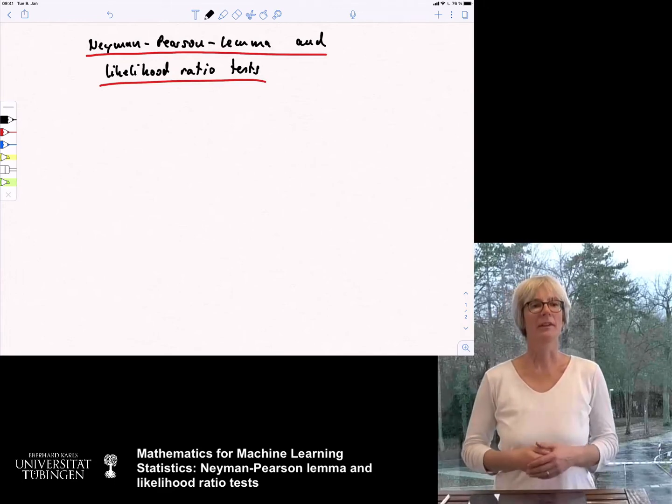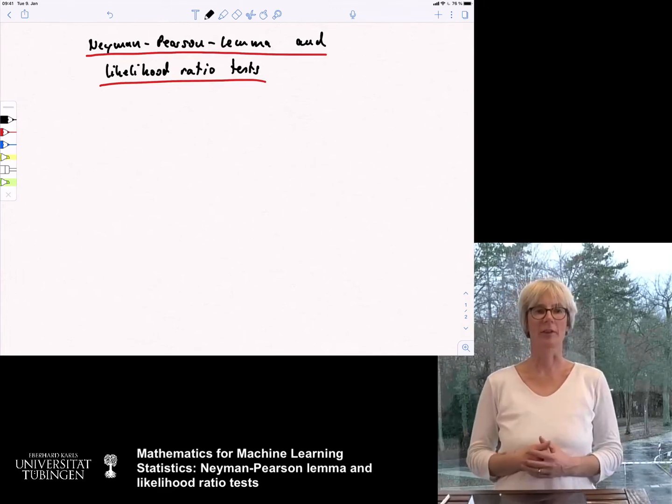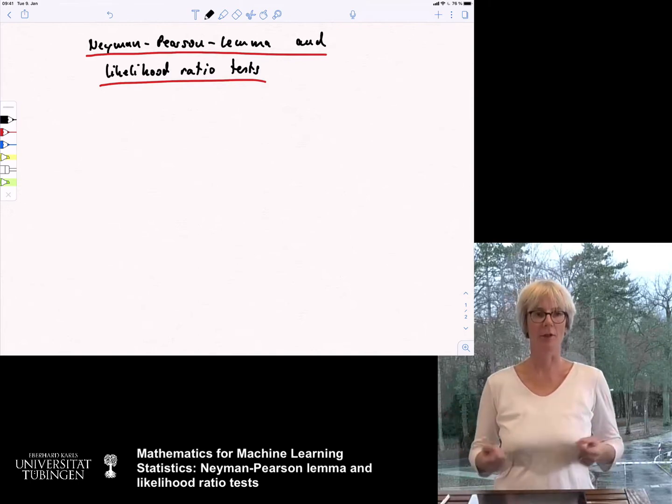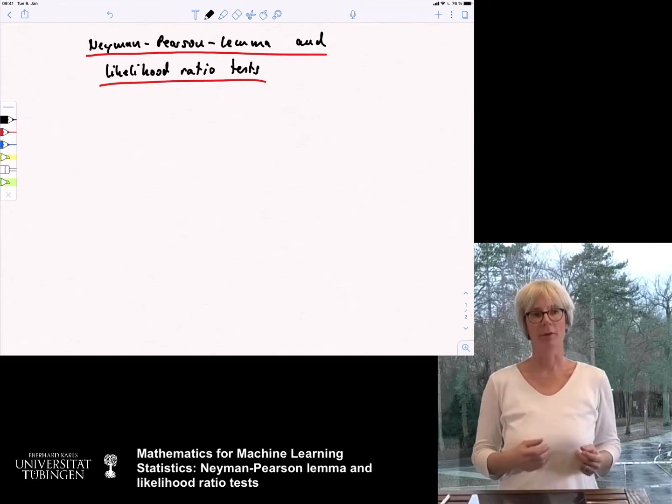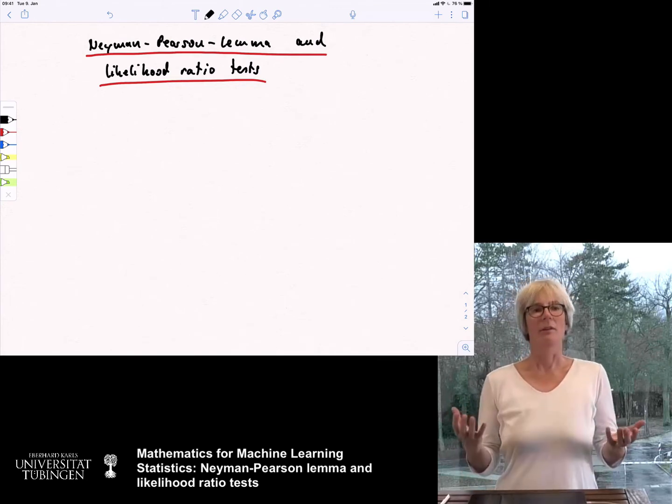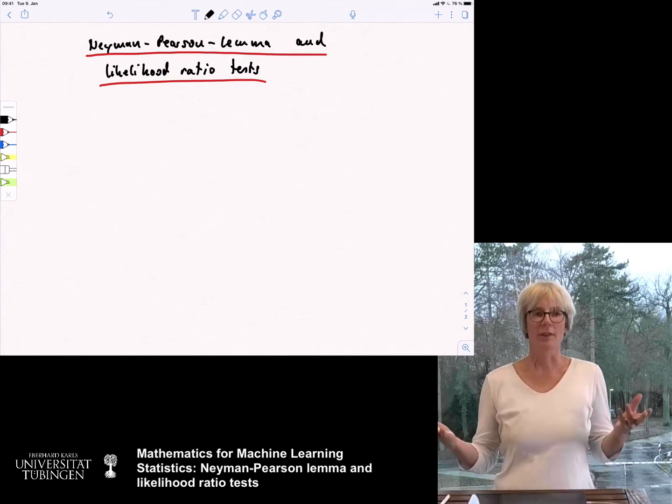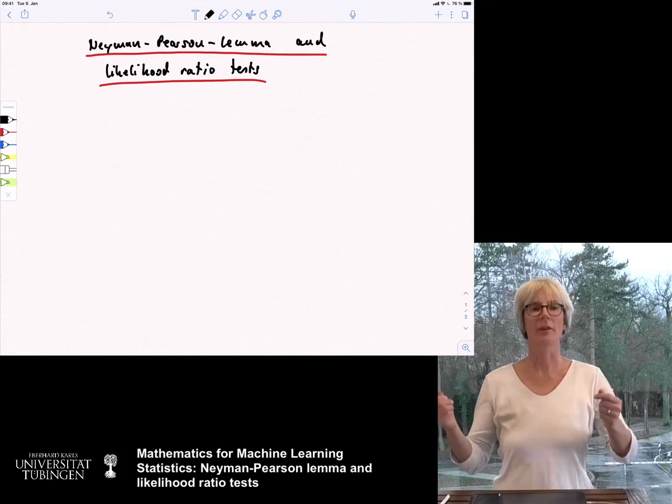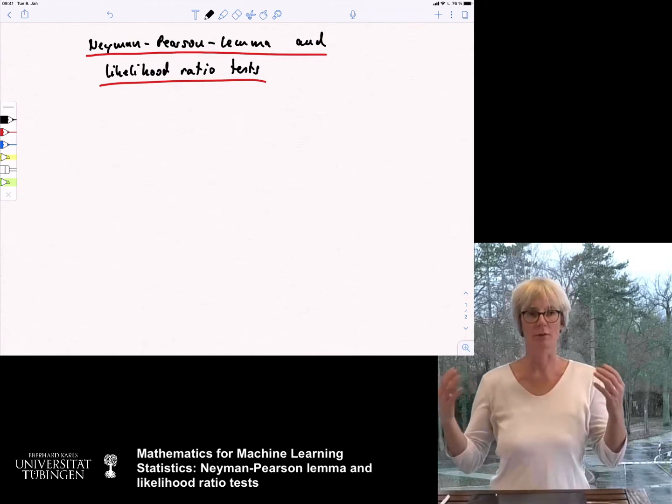In the last lecture we have seen what is the standard concept of a statistical test for testing two hypotheses, a null hypothesis against an alternative hypothesis. We have already said that to construct such a test, typically you first fix the level of the test, which controls the type 1 error.